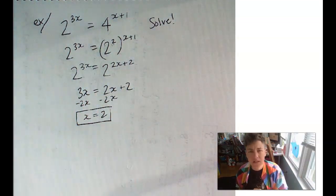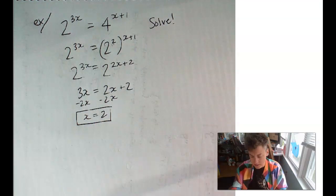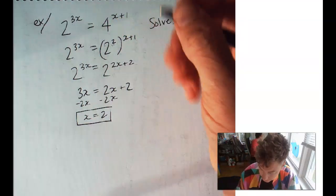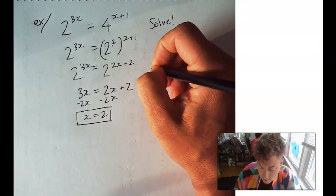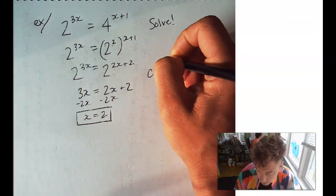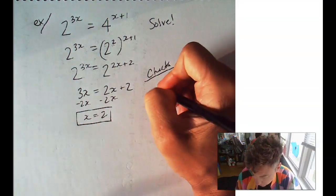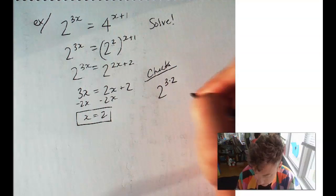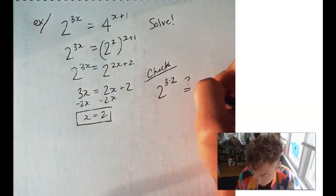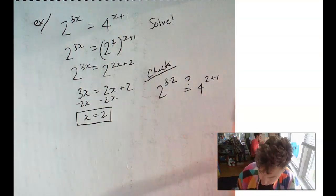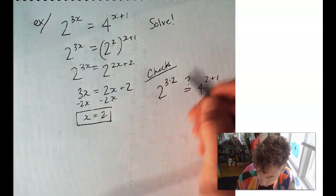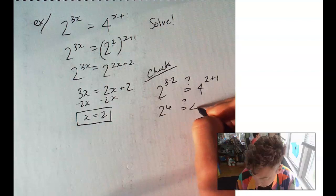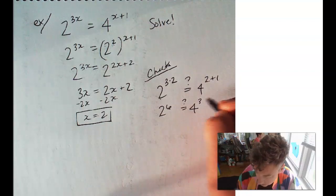How would we check this answer? Well, we could take this guy and plug it all the way up to the top. So, check it out. 2 to the 3 times 2 should equal 4 to the 2 plus 1. 2 to the 3 times 2 is 6.